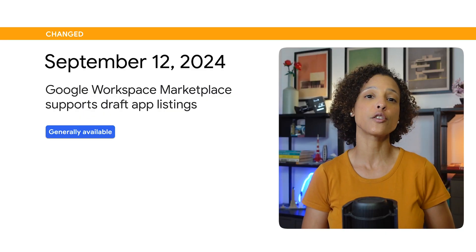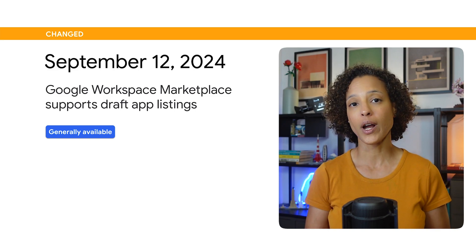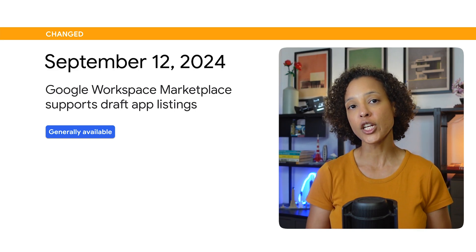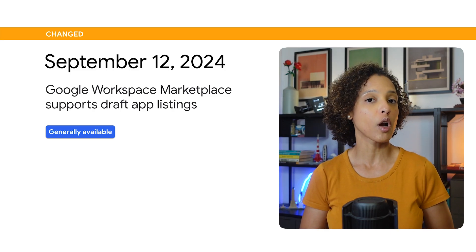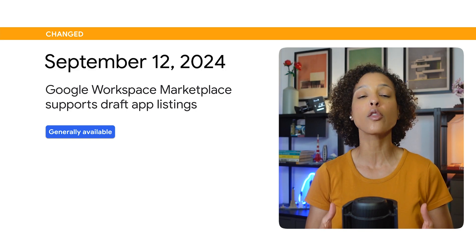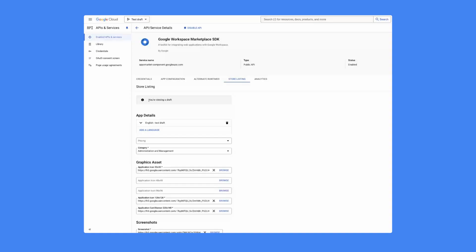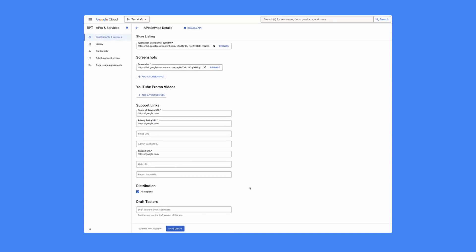You can now make changes to your Google Workspace Marketplace app listing and save them as a draft. This lets you preview and test the changes before publishing them. While your changes are under review, the original app listing remains available on the Google Workspace Marketplace. You can update the configuration or details of your app listing in the Google Cloud Console in the Google Workspace Marketplace SDK.